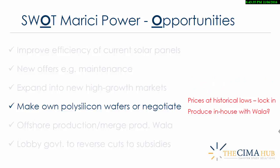Polysilicon is the key component in the production of solar panels, but Marici doesn't produce it themselves — they're reliant on powerful suppliers for this key component. The prices for polysilicon wafers are at historical lows: down from about $400 per kilo in 2007-2008 to about $20 per kilo at the end of 2011, so they've been coming down drastically. Now would be a good time to sit down with suppliers and lock in these lower prices over the medium term, so they're not dealing with uncertainty around the price of their key component. An alternative, of course, is to produce polysilicon in-house — it's a complicated and costly process, but maybe Walla is already doing it themselves.